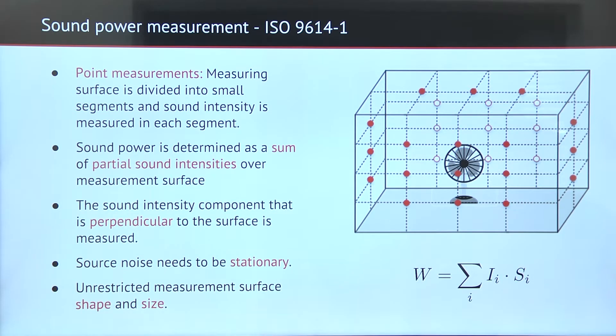The total sound power is calculated as a sum of partial sound power values. Any sound source, large or small, can be measured this way, but it must be stationary and operate with the same sound power between successive segment measurements.